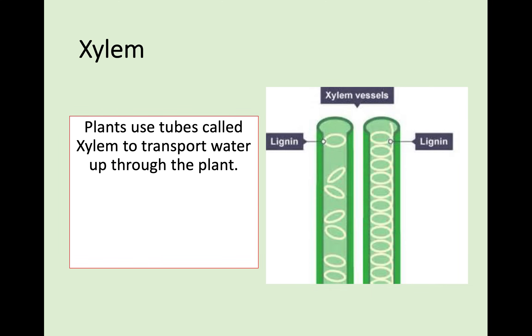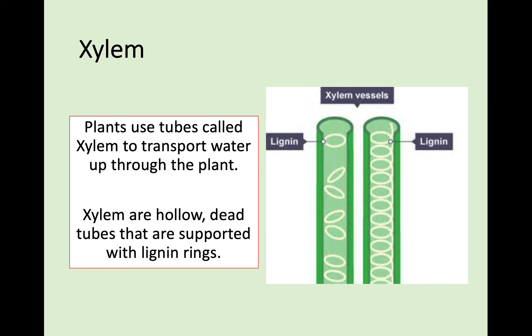Now that the water is inside the plant system, we want to see how it can get to other parts of the plant. Plants use vessels called xylem to transport water up through the plant. Xylem is almost like a straw - they are hollow, dead tubes that are not living, supported by little rings of lignin that give them structure. The important things to note: xylem transports water, the water only goes up, xylem is dead, and it has lignin structures to support it.